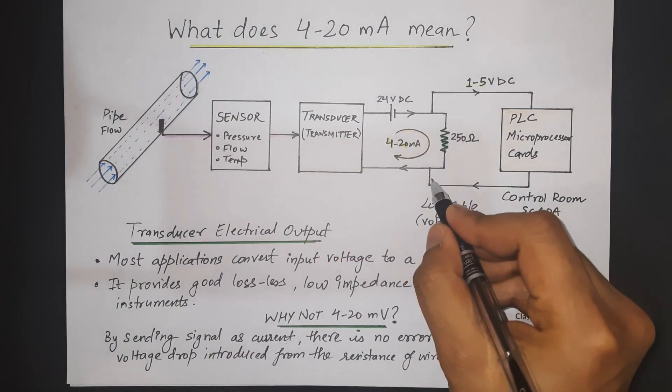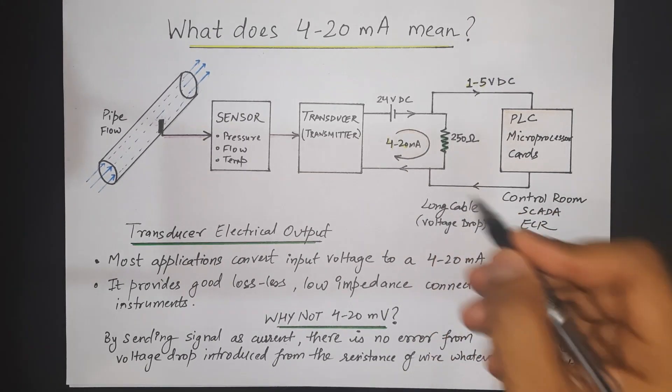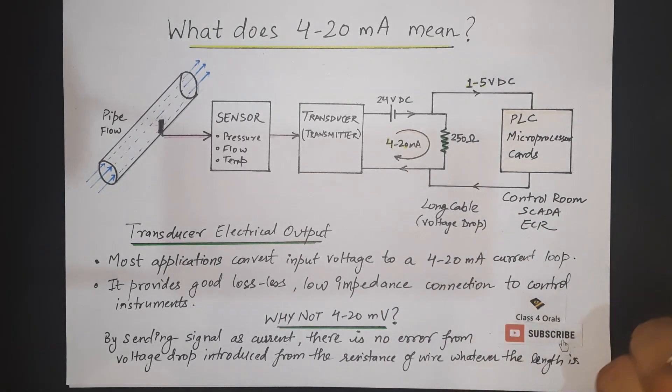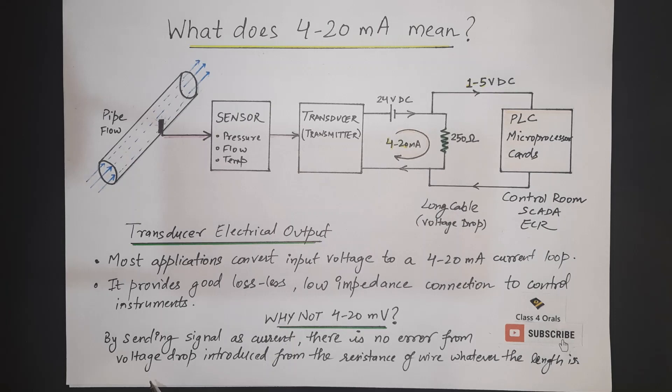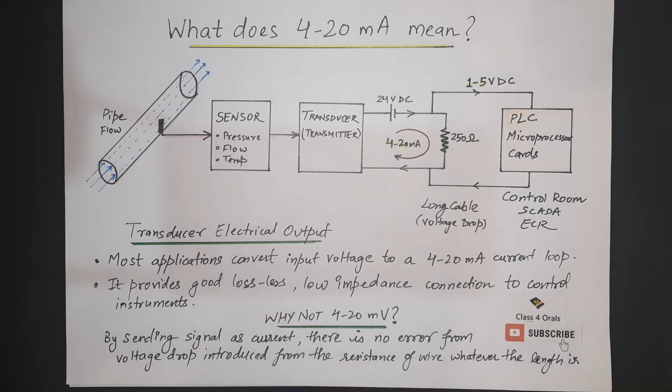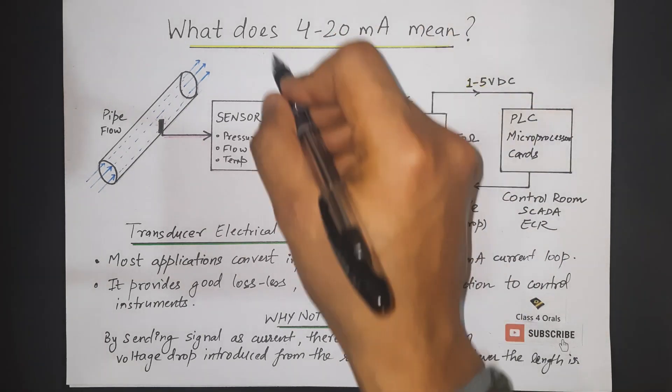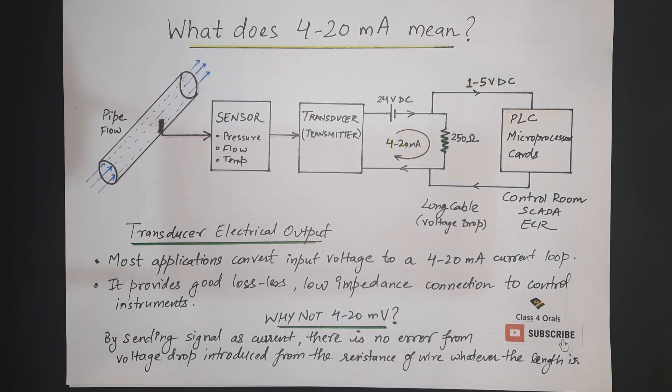This is why we are focusing to measure the signal in the form of current and not in the form of voltage because the voltage drop introduced from the resistance of the wire whatever the length is there will be some error that is why we do not want that error to come hence we are sending the signal in the form of 4 to 20 mA and not 4 to 20 mV.